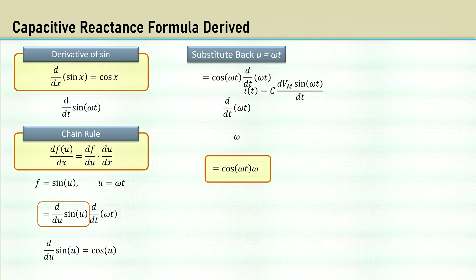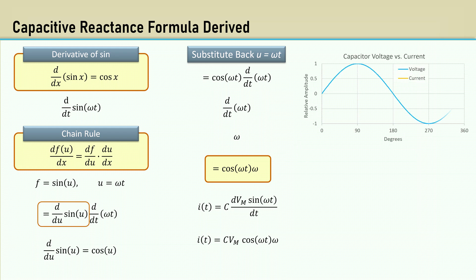Now pulling down the formula we had for current, which becomes C times V max times the cosine of omega T times omega. Then is the current, which we know is the cosine of omega T. Now you can see the current leads the voltage by π over 2, or 90 degrees.